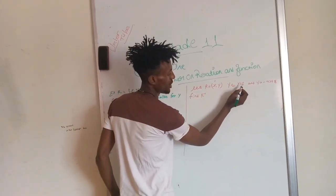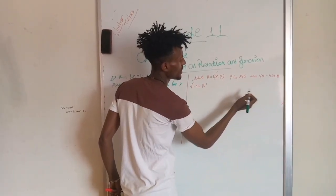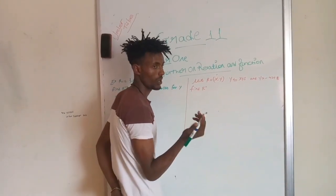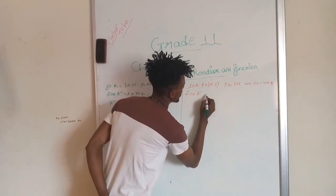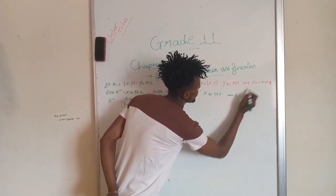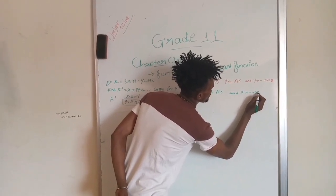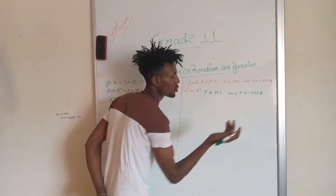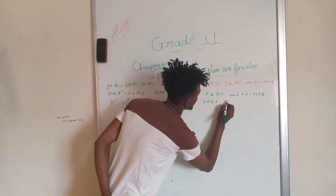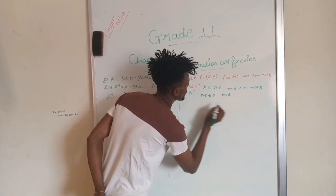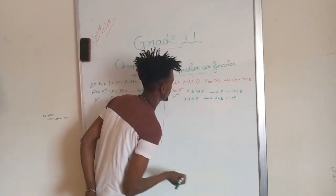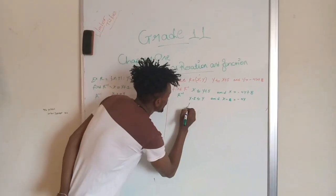Number two: y equals x plus 5, and y is greater than negative x plus 8. For the inverse, interchange x and y: x equals y plus 5 and x greater than negative 4y plus 8. Then solve for y: x minus 5 equals y, and x minus 8 is greater than negative 4y, so solve for y.